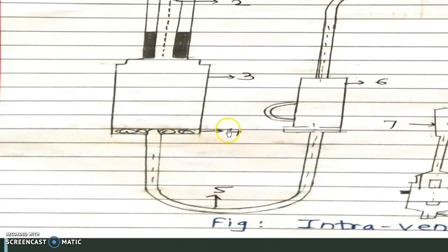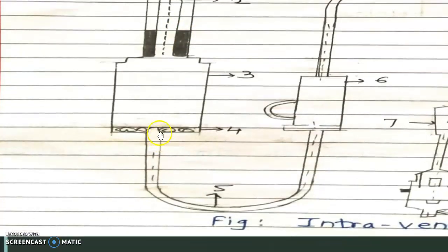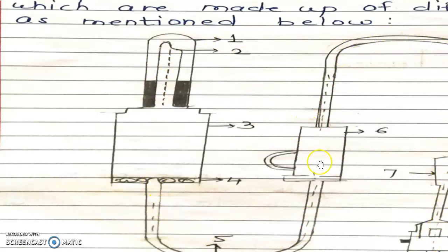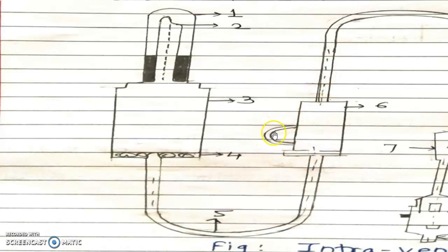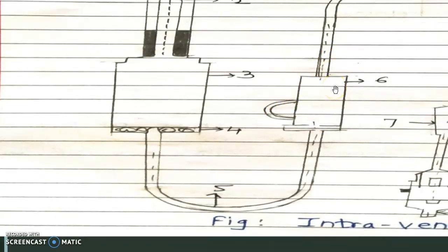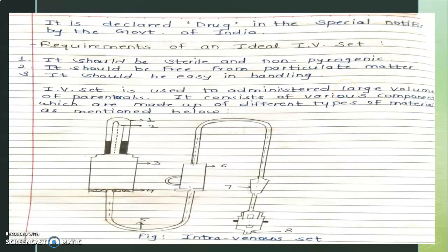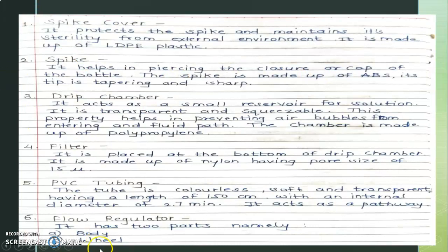Number four is the drip chamber. We also have the saline solution. The first component is the filtering area — a particular solution passes through a filtering chamber. Number five relates to the flow regulator wheel, where you can adjust the speed of the solution flow. Next is the intravenous root flow regulator body, which controls the drip rate.